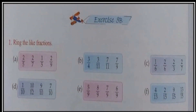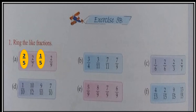Now let us do exercise 9b. First question: ring the like fractions. Like fractions have the same denominators. Part A: 2 upon 5, 2 upon 7, 1 upon 5, 2 upon 9. The fractions with the same denominator are 2 upon 5 and 1 upon 5 — both have denominator 5. Part B: 3 upon 4, 3 upon 11, 7 upon 11, 7 upon 9. Here 3 upon 11 and 7 upon 11 have the same denominator 11, so they are like fractions.